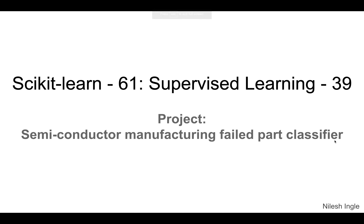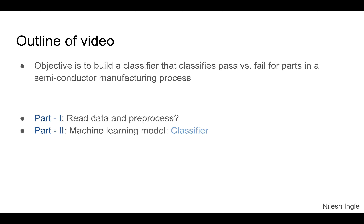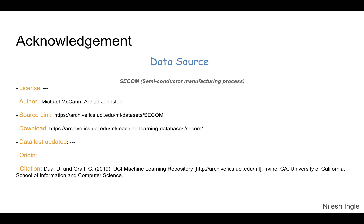Hello and welcome to Learn Data. I'm Nilish and in this video we are going to look at a project related to the manufacturing process for semiconductor parts. We'll build a classifier that classifies a part as pass or fail based on data collected from a semiconductor manufacturing process. The video is divided in two parts: part one deals with reading the data and pre-processing it, part two is where we build the machine learning classifiers. Thanks to the UCI Machine Learning Repository for providing this open source dataset — the link is in the description.